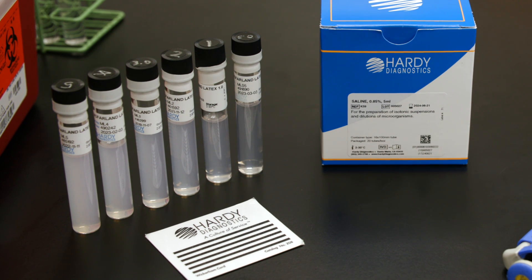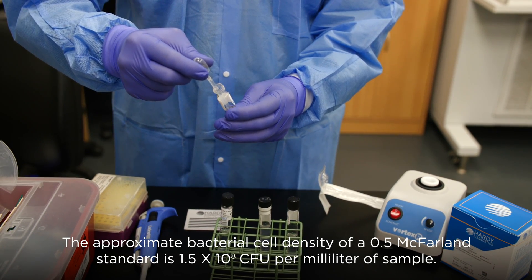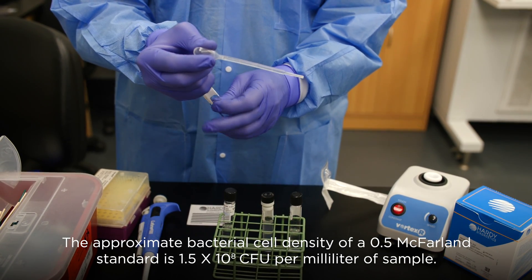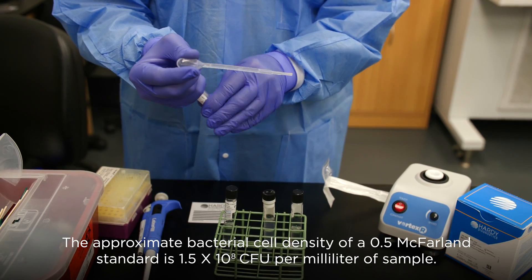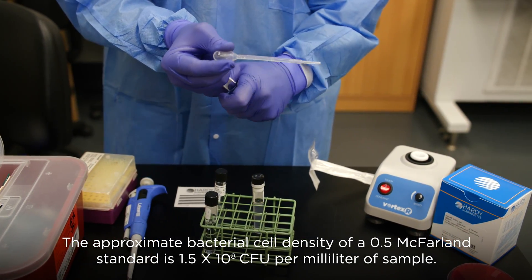The approximate cell density differs per McFarland standard. The approximate bacterial cell density of a 0.5 McFarland standard is 1.5 times 10 to the 8 CFUs per milliliter of sample.